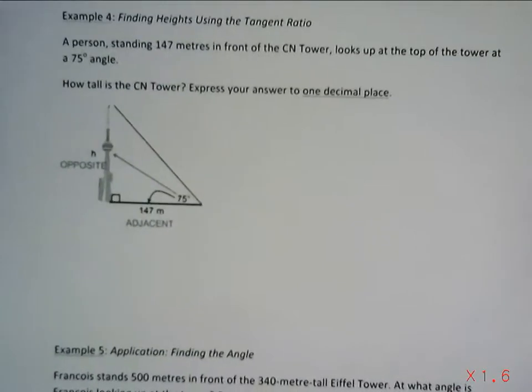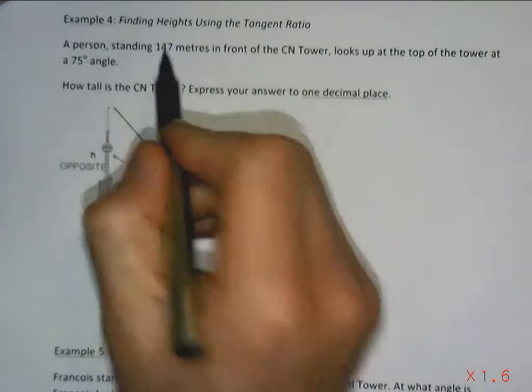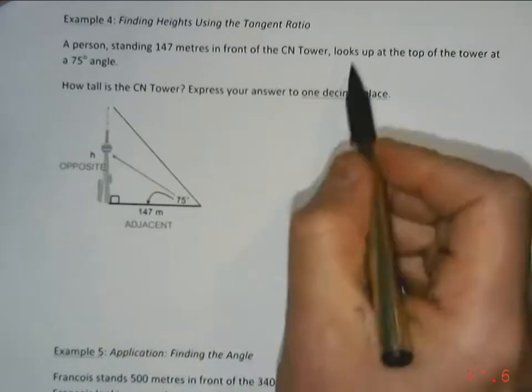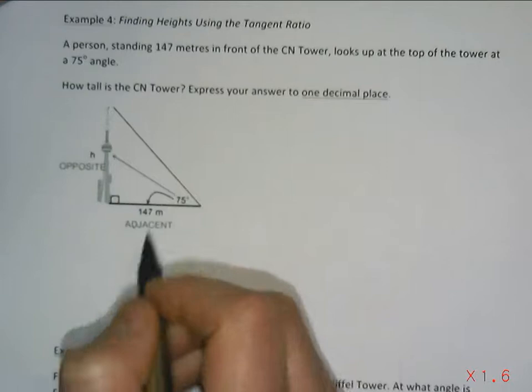Okay, so example four. We've got a person standing 147 meters in front of the CN Tower. They look up to the tower at an angle of 75 degrees.